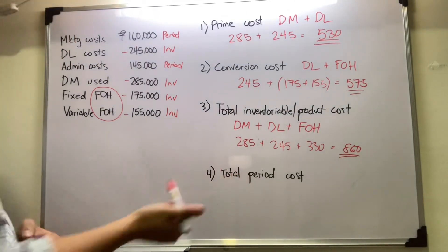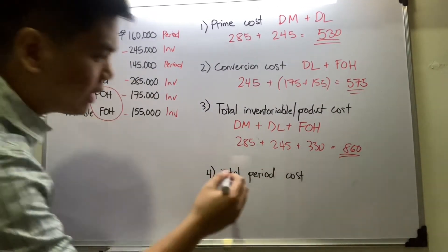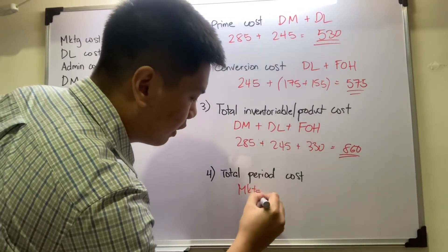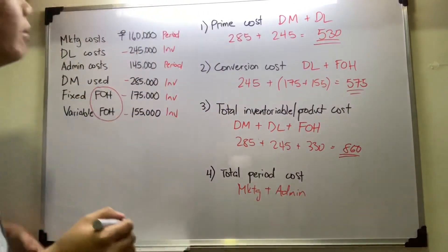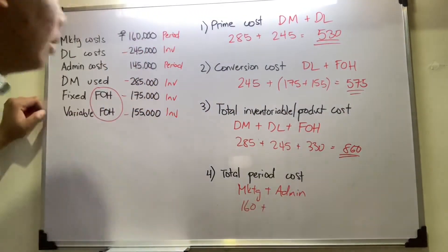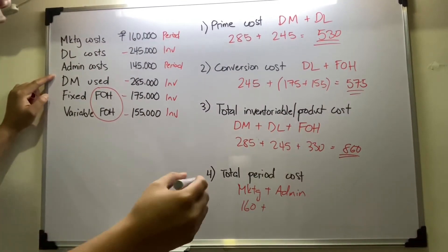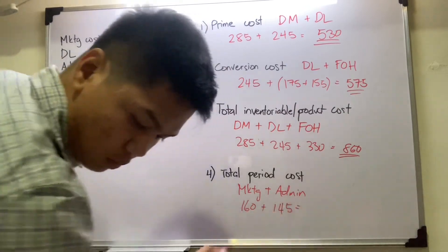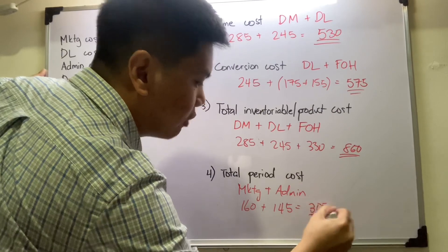For the total period cost, you simply add marketing plus administrative costs. You have your marketing cost of 160,000 pesos plus your administrative cost of 145,000, giving you a total period cost of 305,000 pesos.